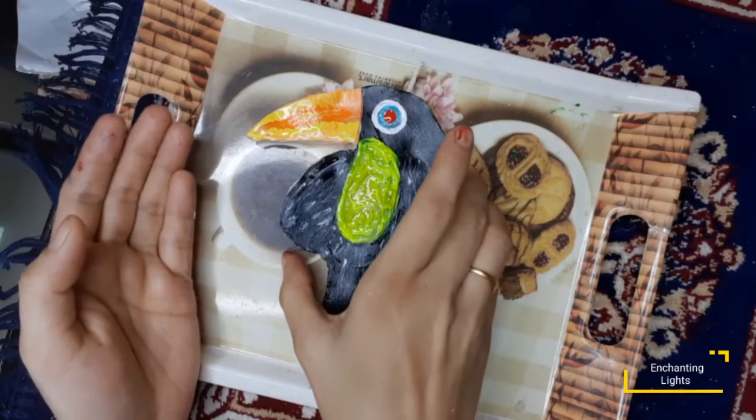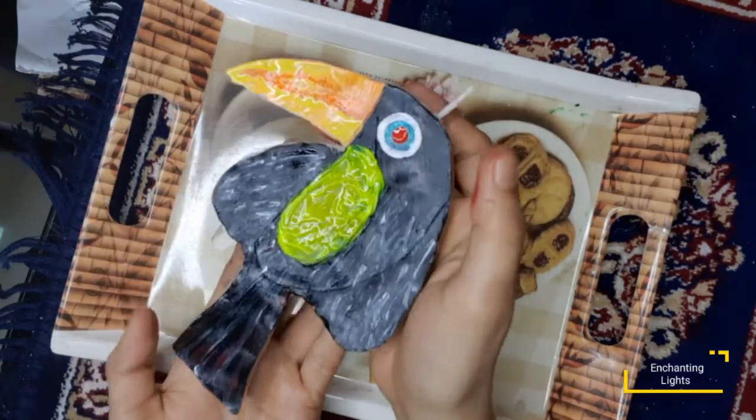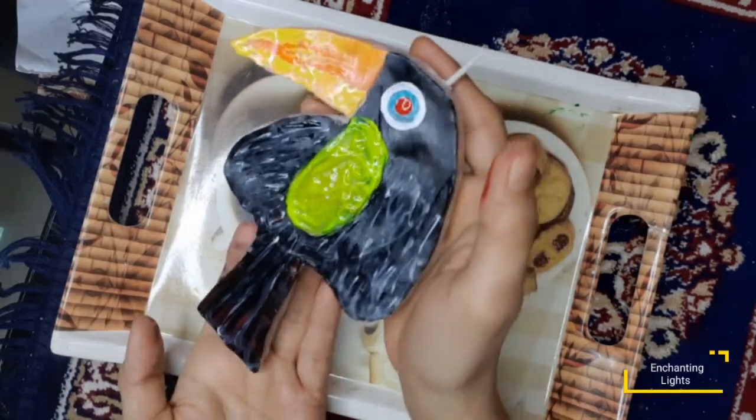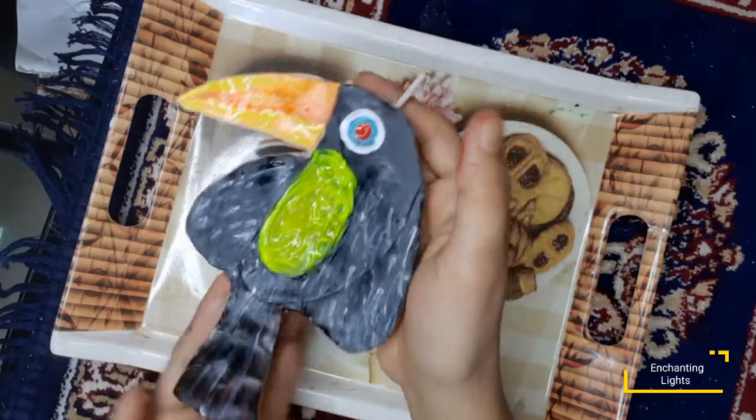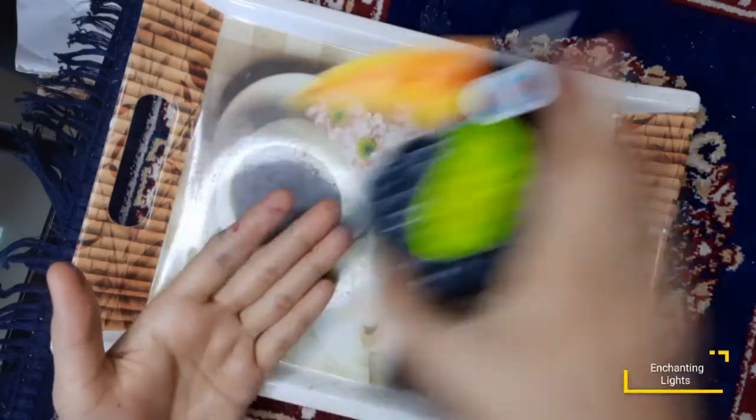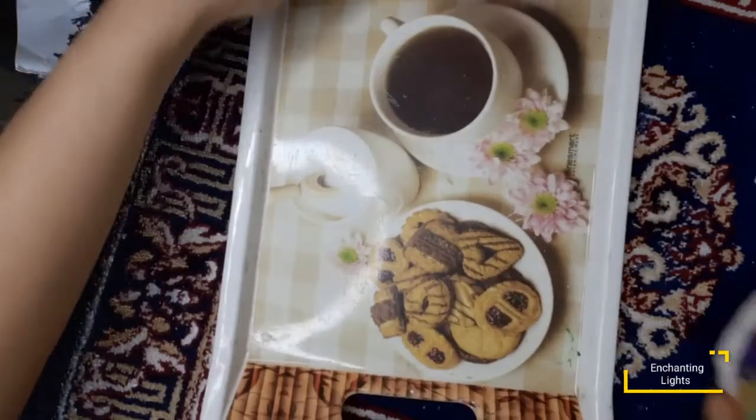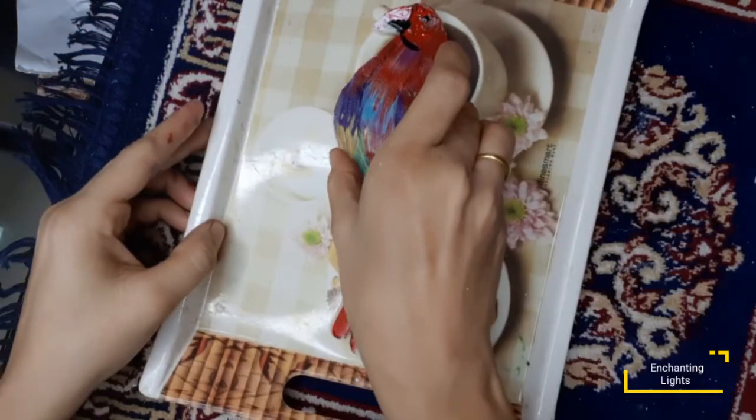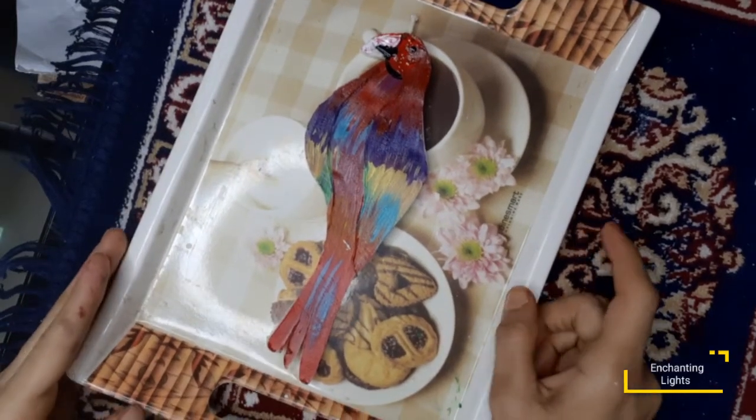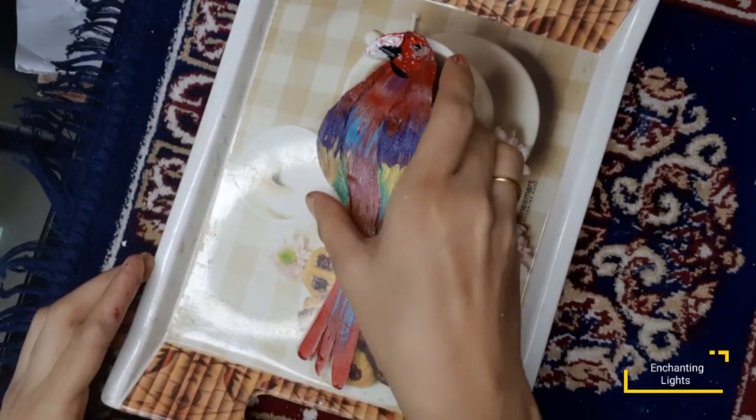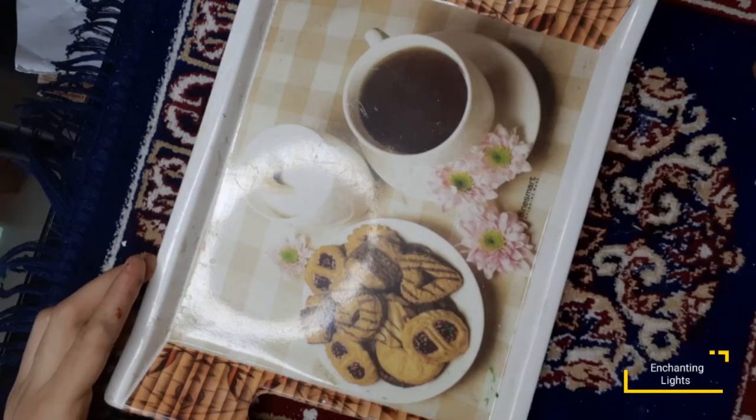So guys, this is how my toucan candle looks like. The paint has completely dried and you can see the beautiful colors. I'll show you now the macaw one. So this is how I've made the macaw in a similar way. So these are the two candles - tropical birds which I have made. I hope you like today's video.